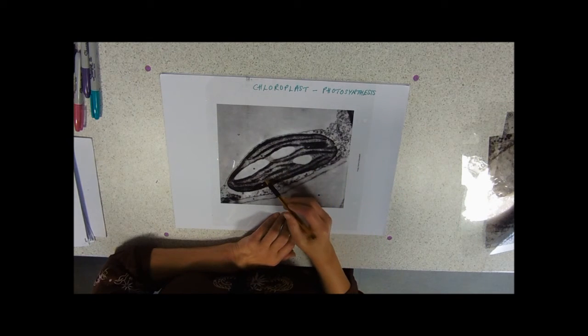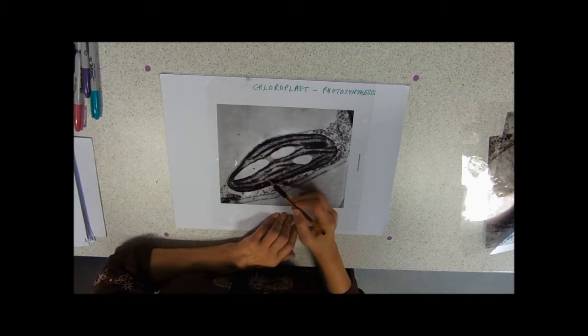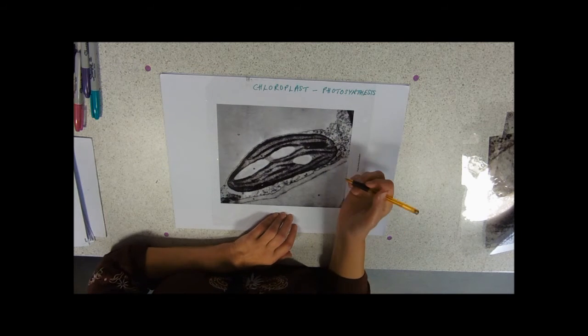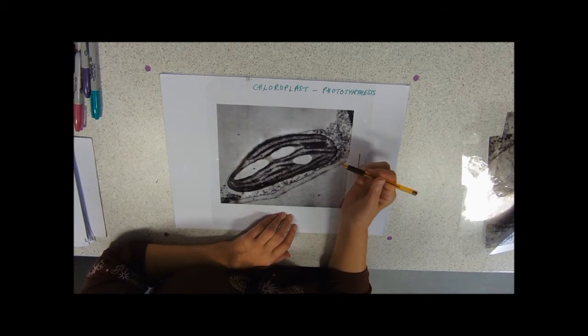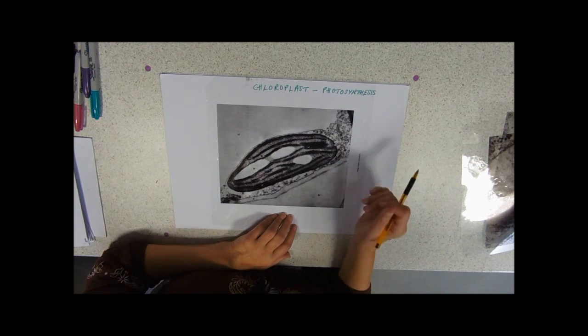You can see that we've also got this background, what in a mitochondria would be called a matrix, and in a chloroplast it's called a stroma. We do need to be careful with the spelling, because obviously if we miss the R out, it looks like stoma, which is a hole in the bottom of a leaf.